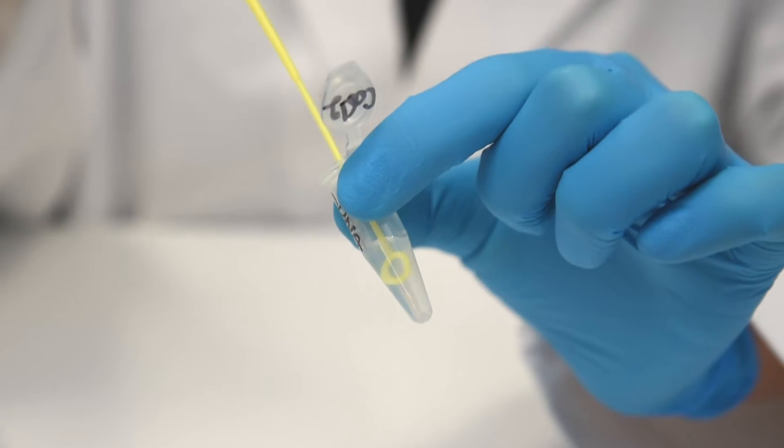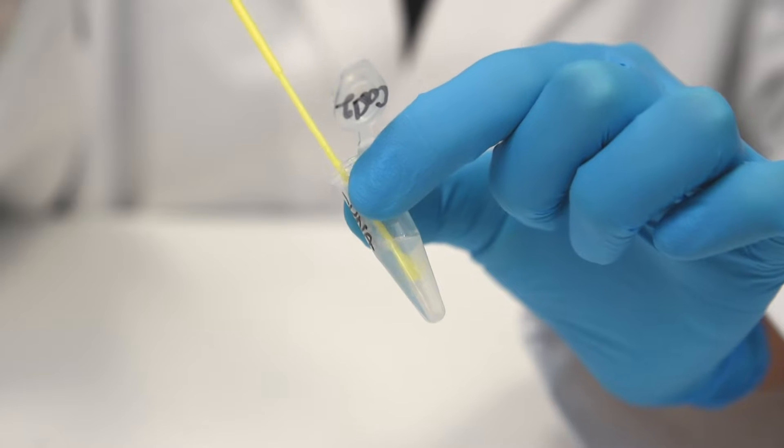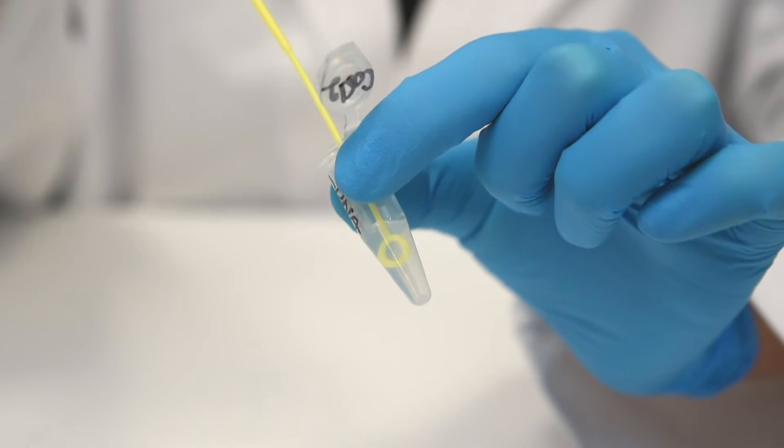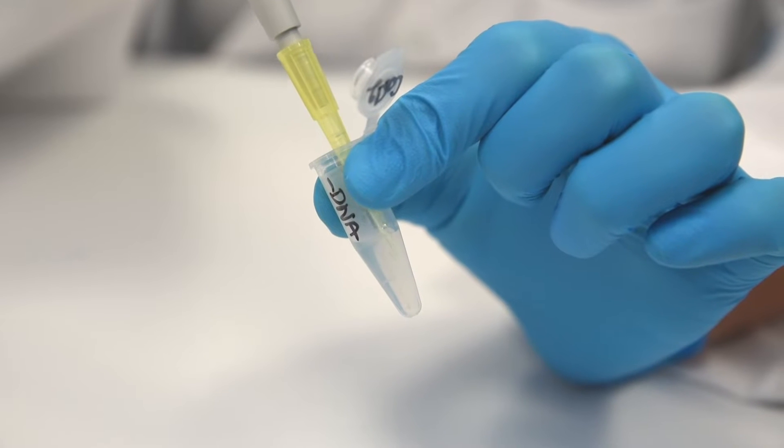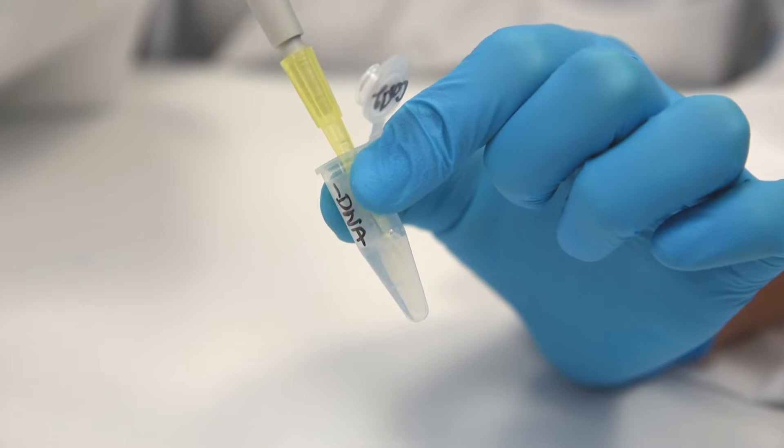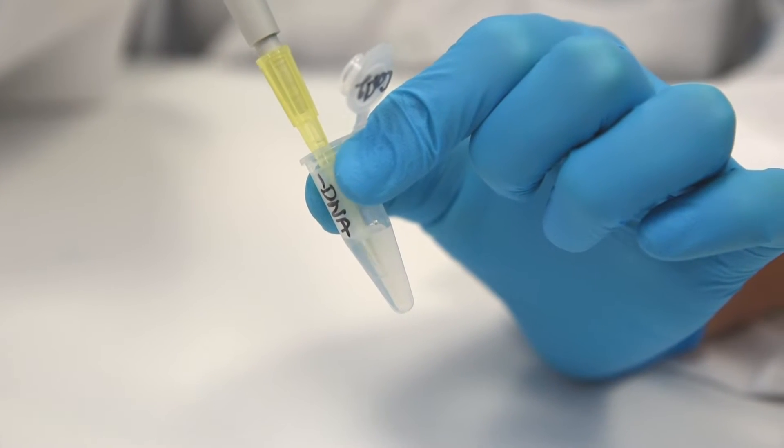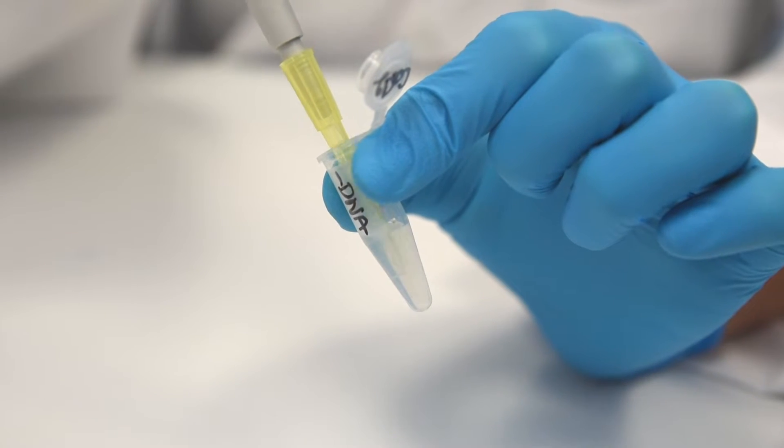Step 3. Twist the loop between your fingers to free the cells. Resuspend the bacterial cells in the calcium chloride solution by pipetting up and down until no clumps of cells are visible and the cell suspension looks cloudy. Treat the cells gently.